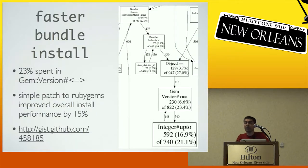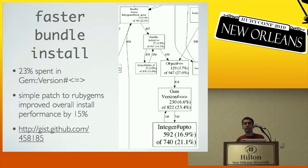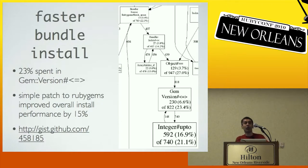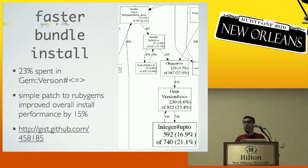I ran PerfTools on Bundler and noticed that about 25% of the time was being spent in the Gem::Version spaceship operator function — because Bundler does a lot of version comparisons to figure out the optimal versions based on your Gemfile. Once I knew that was the issue, I patched that function with a bunch of micro-optimizations. Even those were good enough to give Bundler a 15% overall improvement. The point is: once you profile your application and know a lot of time is spent in a certain function, it makes sense to invest in improving that function.